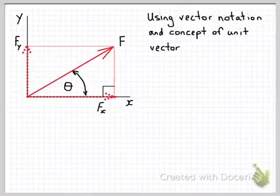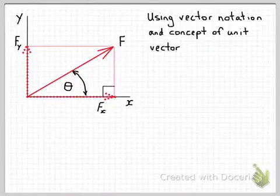The unit vector is simply a vector of one unit magnitude in one of the three orthogonal directions x, y and z.